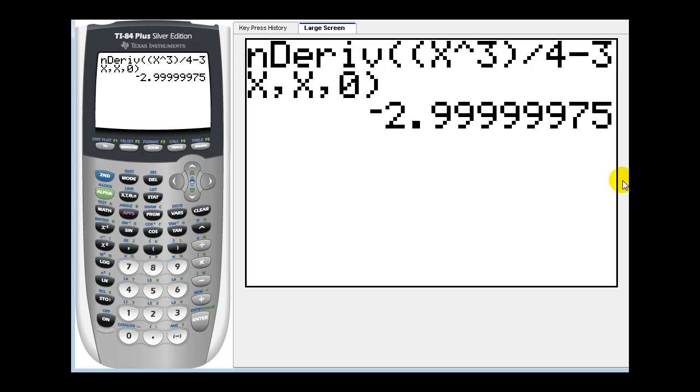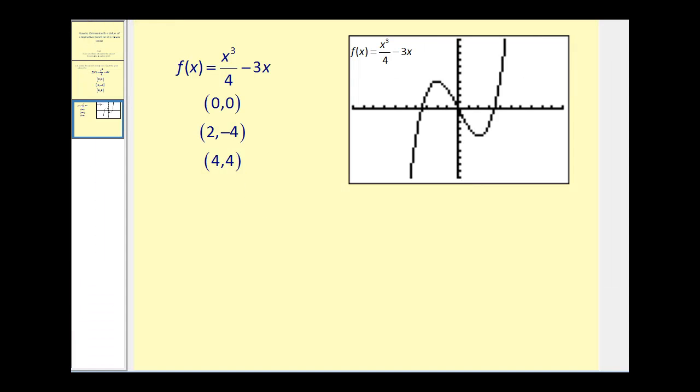Now we have to notice that the graphing calculator is not going to get the exact value all the time. We need to recognize this value as -3. Let's go ahead and record that, and then we'll come back to do the other two. So what we just found was that f'(0) is equal to -3.